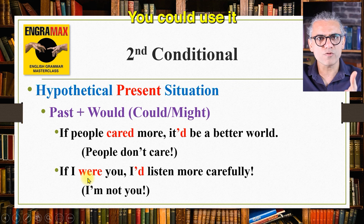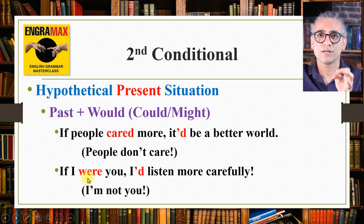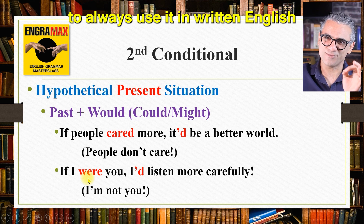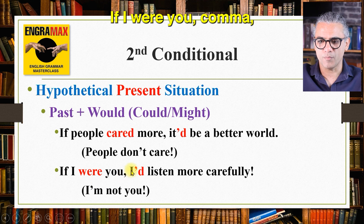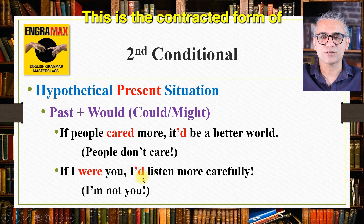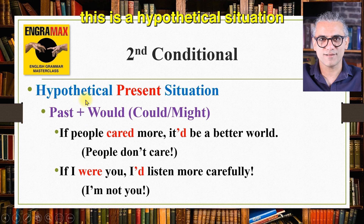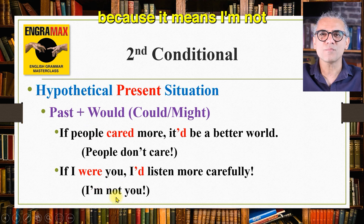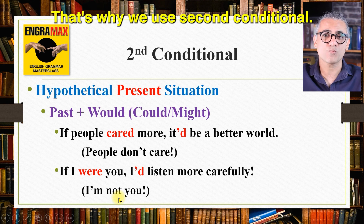You could use 'were' in spoken English too, but be careful to always use it in written and formal English. For example: if I were you, I'd listen more carefully — that is the contracted form of 'I would listen carefully'. If I were you is a hypothetical situation because it means I am not you. That's why we use the second conditional.